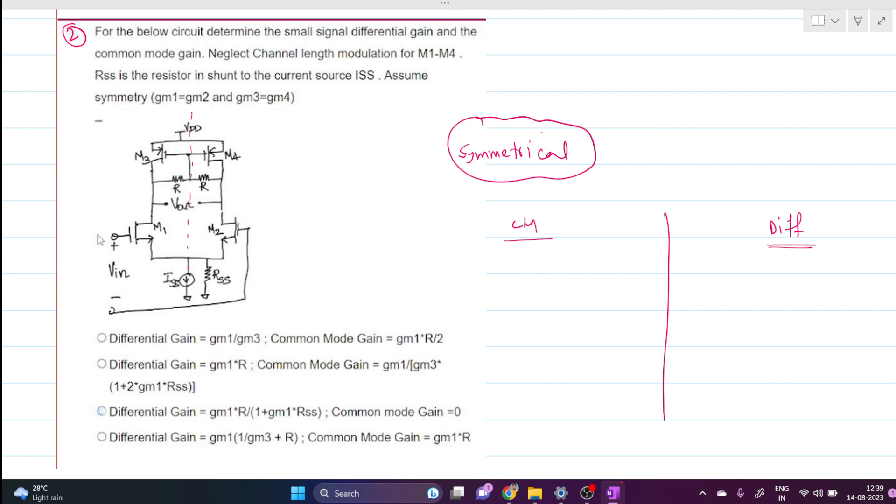We know that for symmetrical and differential input of the differential pair circuit, this line of symmetry point doesn't change with respect to time. It is incrementally grounded, like this is AC grounded, and incremental voltage at this line of symmetry is always zero, whatever is connected at the tail node.